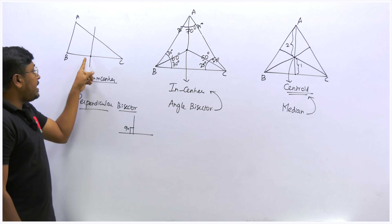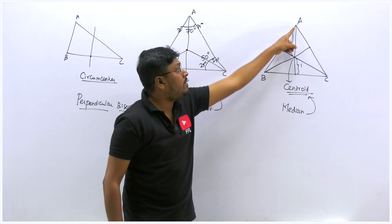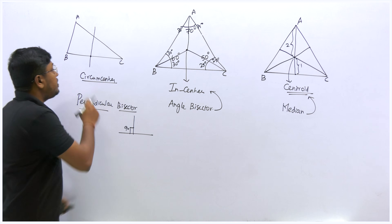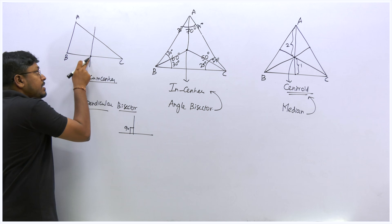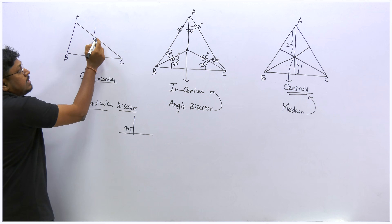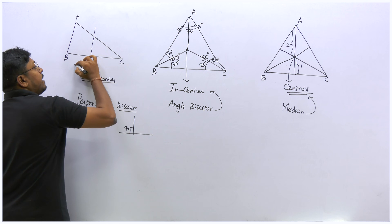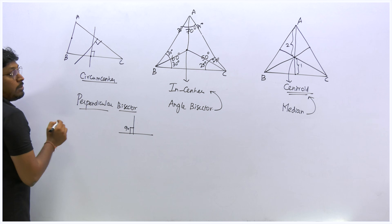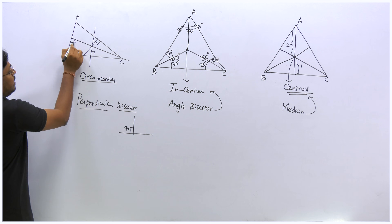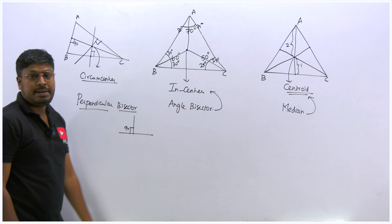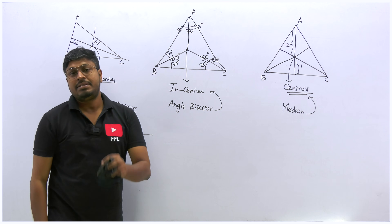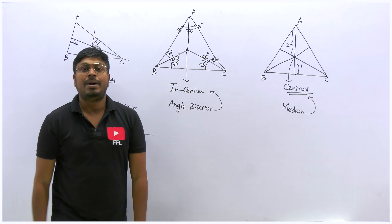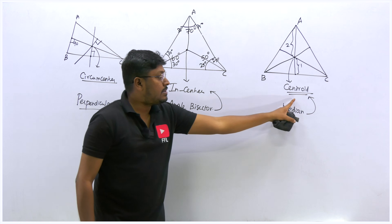Similarly, find the midpoint of AC and draw a perpendicular line at 90° from that midpoint. Find the midpoint of AB and draw a perpendicular line at 90° from that midpoint as well. The point where all three perpendicular bisectors meet is called the circumcenter. So: perpendicular bisectors drawn from the midpoints of all three sides of a triangle meet at the circumcenter.